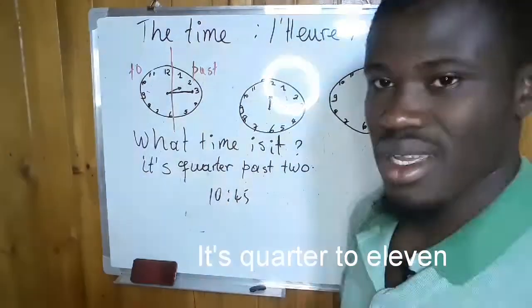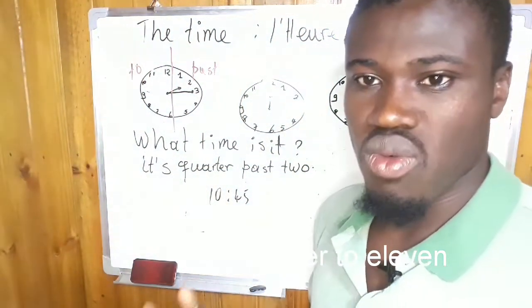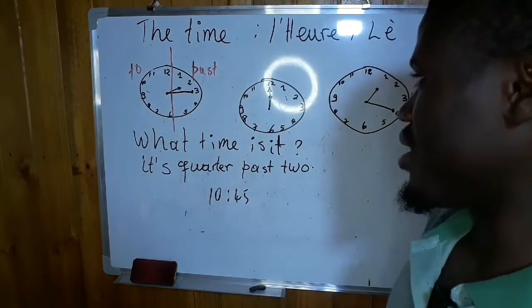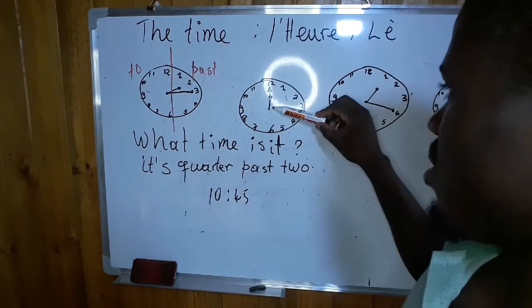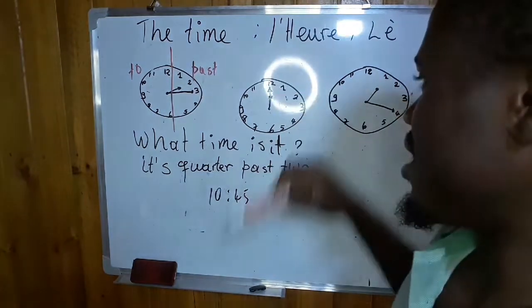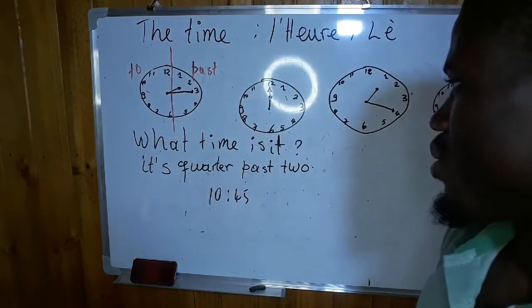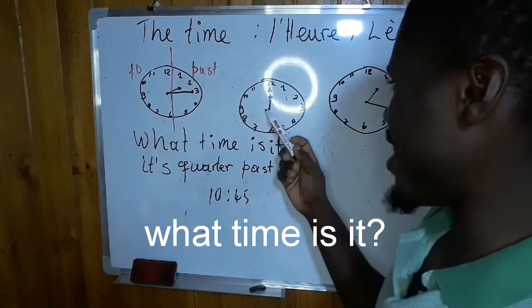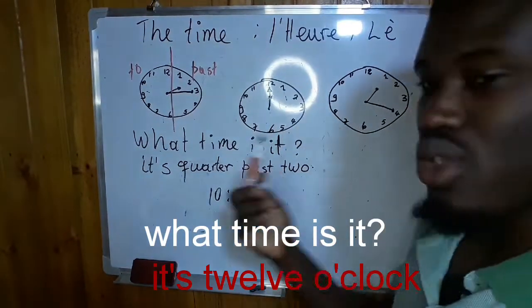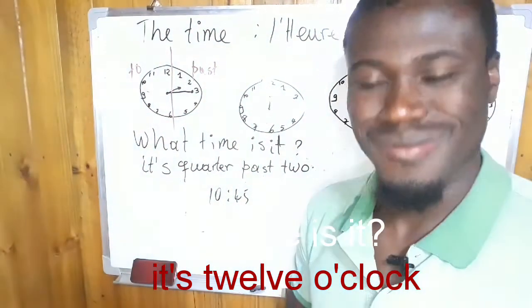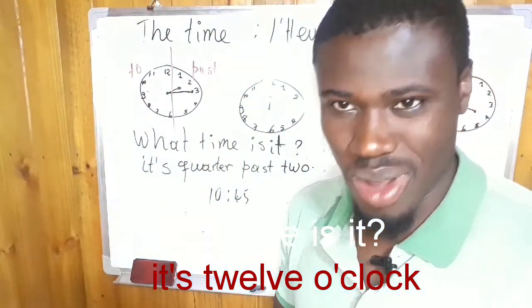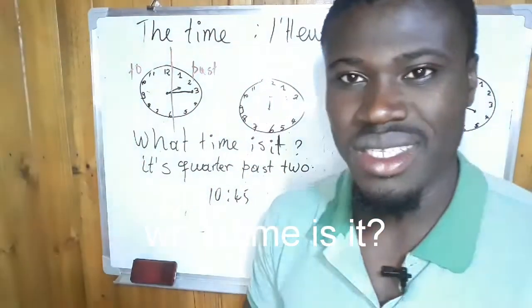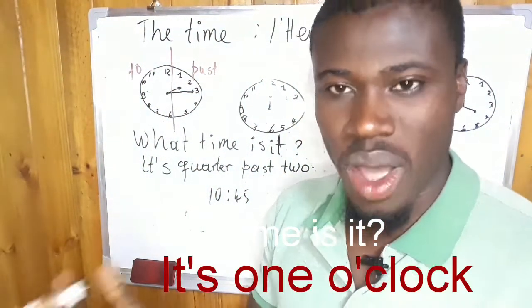And if the clock is exactly at noon — what time is it? It's 12 exactly. It's 12. What time is it? It's 1 exactly — it's 1 o'clock.